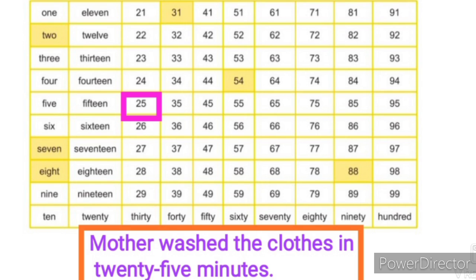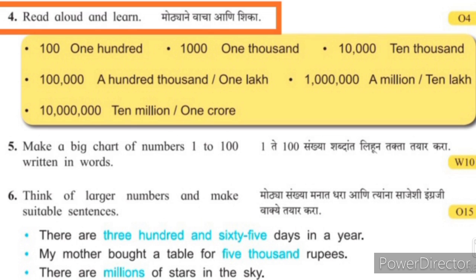Friends, we chose 5 numbers and made 5 sentences based on those numbers. Aapan paach sankhya nivadlya aani tya paach sankhyavar aadhrit paach vakye tayar kele. You have to try this too — tumhaalahi aasa prayatna karaycha ahe. Now Instruction number 4: Read aloud and learn. Mothe ne vaach aani shika. You can see these numbers — these are bigger numbers — mothya sankhya ithadilya aahet.